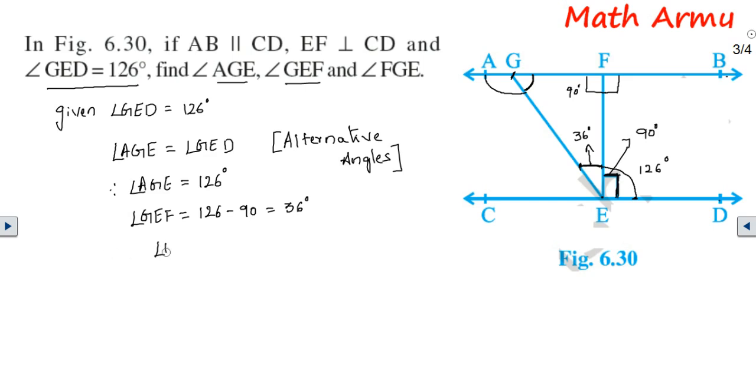When you know that angle F is 90 and angle E is 36, what is the sum of angles within a triangle? It is 180.